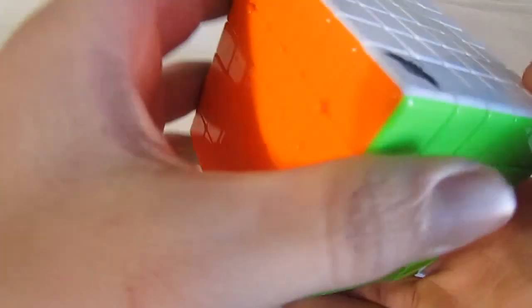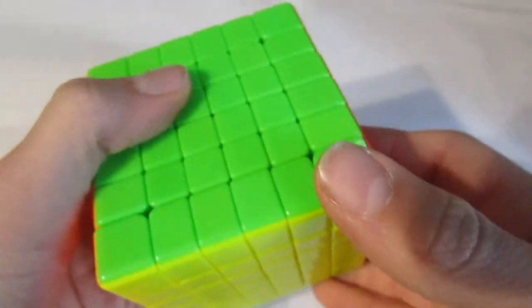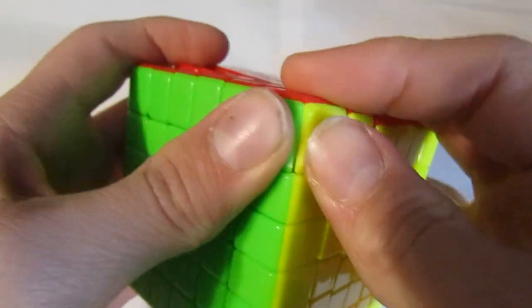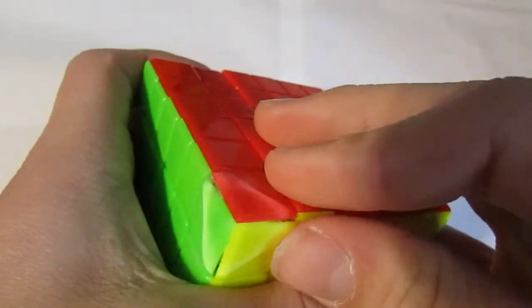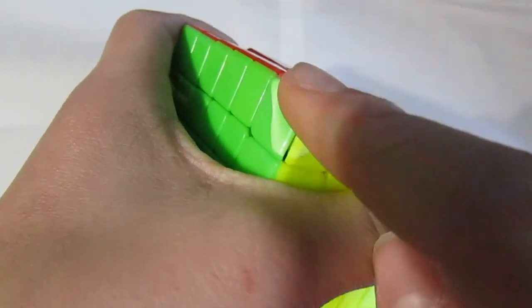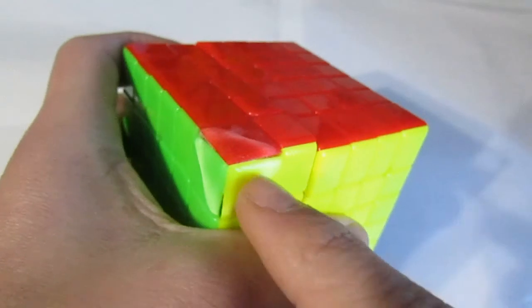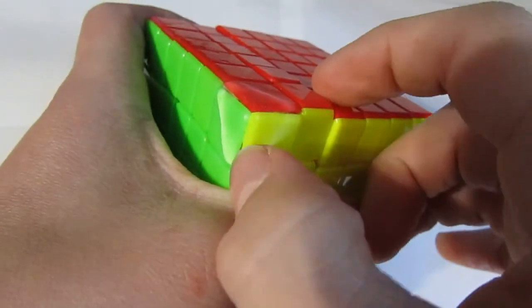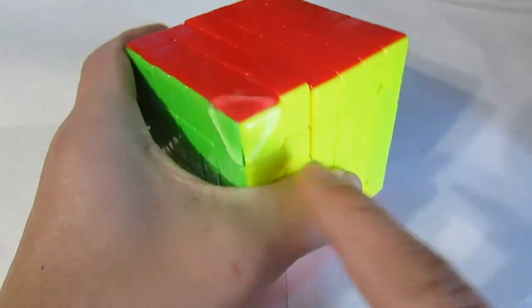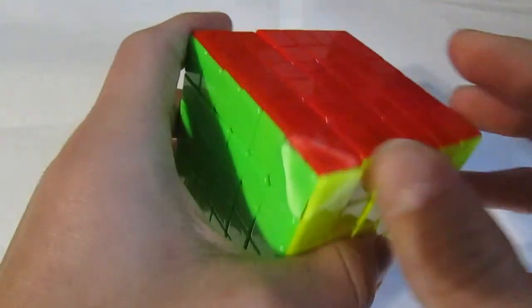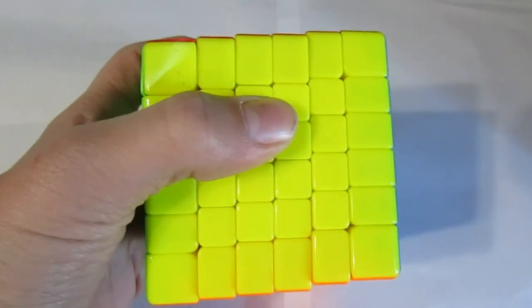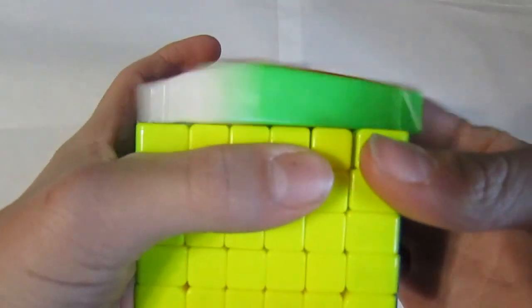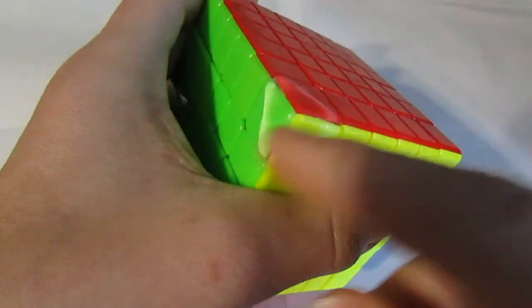Next up, I got this Cyclone Boys 6x6, and I dropped it, and I guess it fell right there on the tip of the corner, because now the corner is popping out a little bit, and you can see kind of the indent. But overall, I love having a 6x6 now. I have to solve it more because it's still all functional.